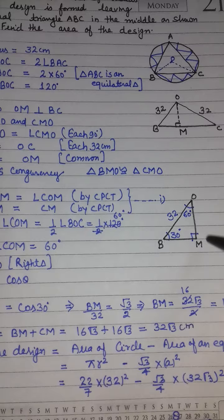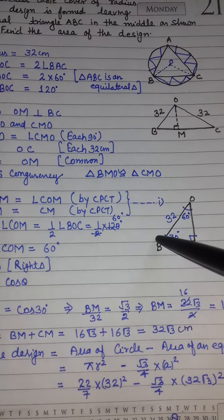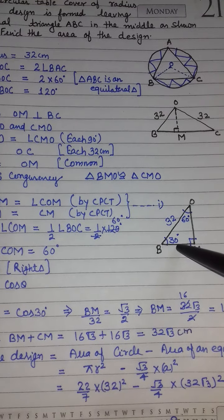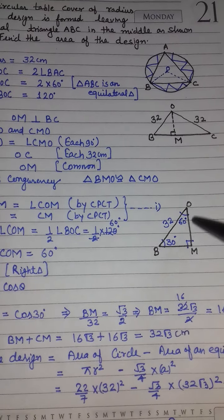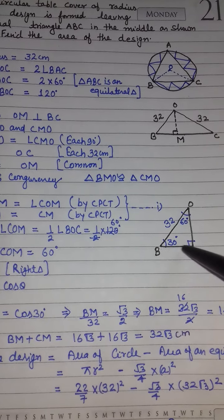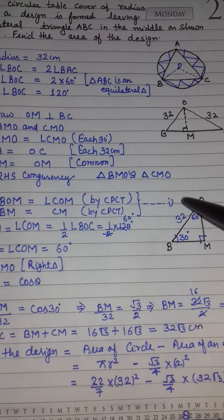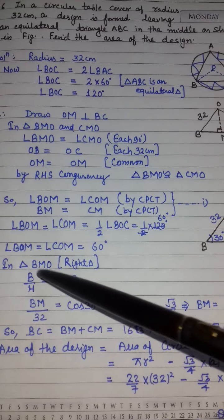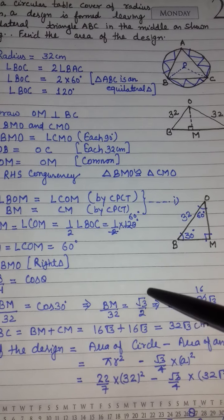इसमें दो acute angles हैं। Angle की opposite वाली side perpendicular होती है, adjacent side base होती है। मुझे BM चाहिए जो base है। Base upon hypotenuse = cos θ। तो BM/hypotenuse = cos 30°। BM/32 = √3/2।